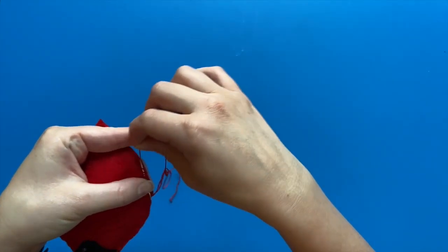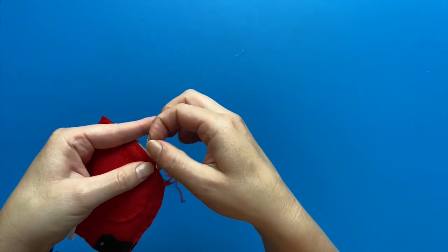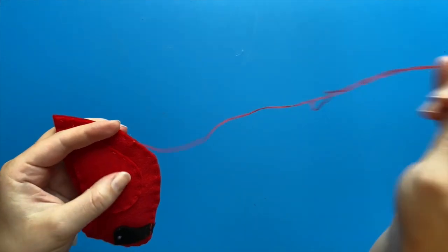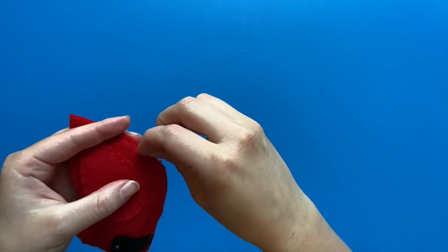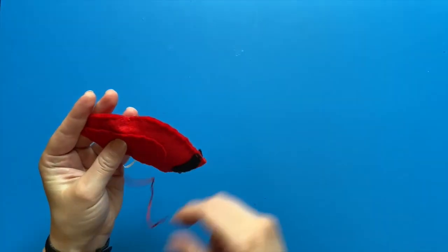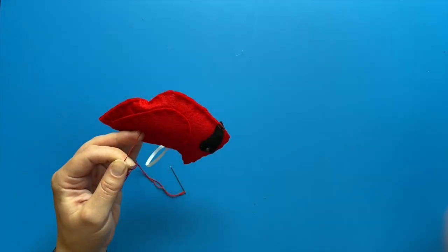Make a knot like we did before, but before you cut the thread, take your needle and stick it into the bird near the knot and pull it out somewhere in the middle of the wing. Pull it just a little bit tight and cut off the thread there. This hides the thread tail and helps to make it a little more secure.